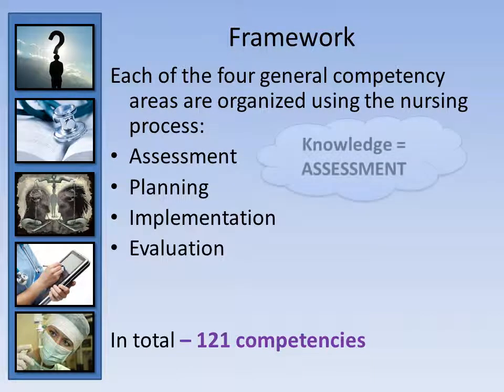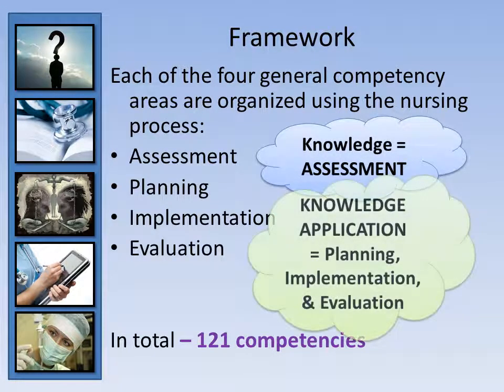Each of the four general competency areas — professional responsibility and accountability, ethical practice, service to the public, and self-regulation — are organised into subsections. Each section reflects a category in the nursing process: assessment, planning, implementation, or evaluation. The College of Nurses of Ontario states that knowledge can be equated to assessment, and knowledge application to planning, implementation and evaluation.